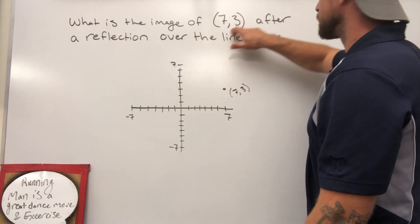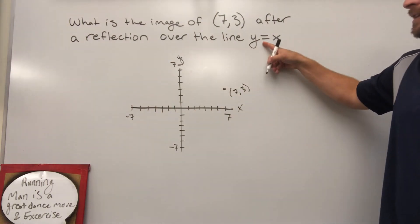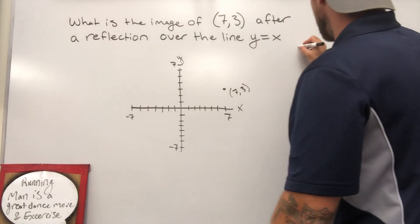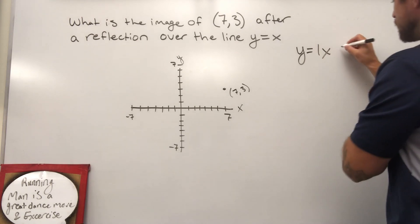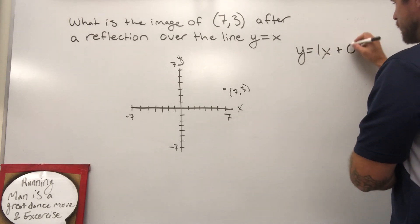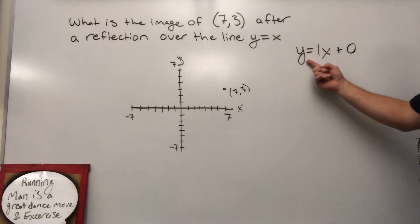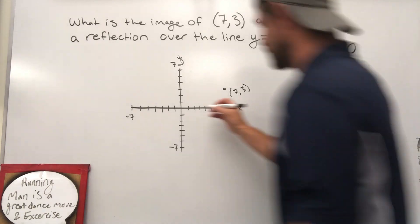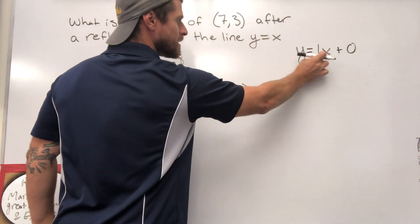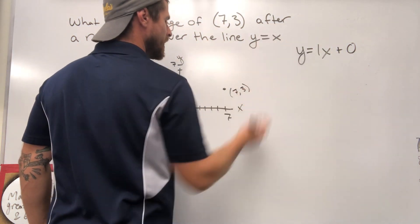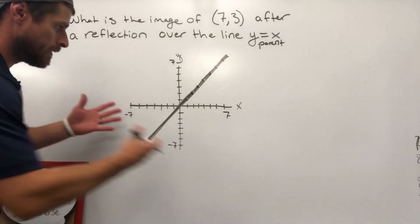What is the image of (7, 3) after a reflection over the line y equals x? We're going to reflect over this line y equals x. Now y equals x can also be written out as y equals 1x. The y-intercept is not visible, it's 0. So what we're actually looking at here is a parent function of linear equations. y equals 1x plus 0, meaning we're starting at 0. This is the most basic of lines we could possibly create. Our slope is the value attached to the x. So we've got y equals x is just up 1 over 1, up 1 over 1, up 1 over 1. And there's that line.